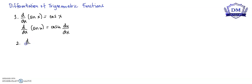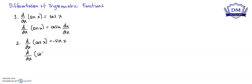The derivative of cosine x is equal to negative sine x. Or using the chain rule, the derivative of cosine u with respect to x is equal to negative sine u times du over dx.